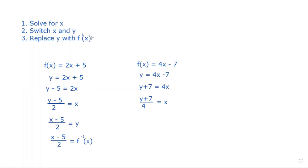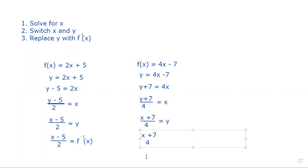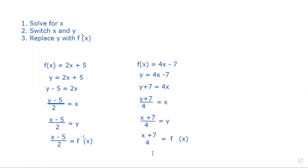Remember, we've solved for x. The next thing we need to do is switch our x's and y's. Once we've switched our x's and y's, we replace y with f-inverse. And that's how we do this one.